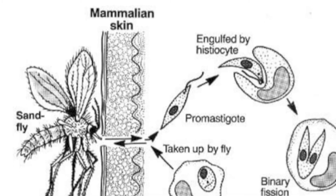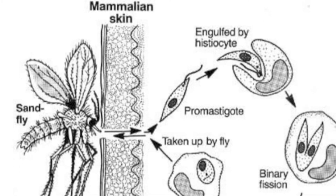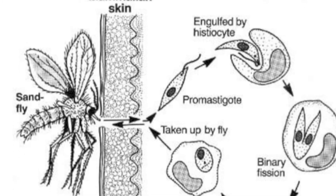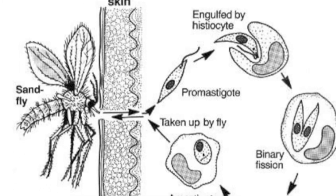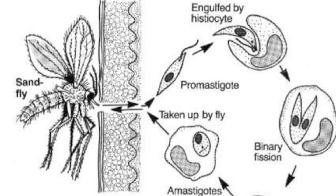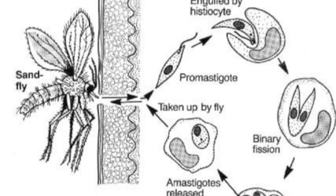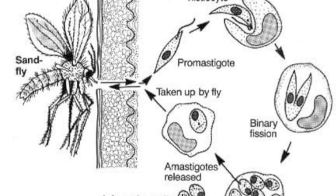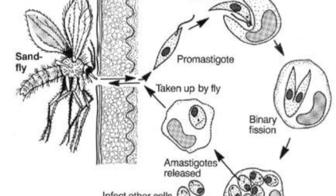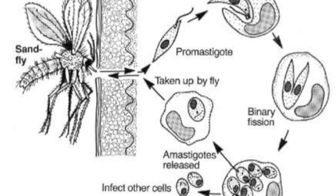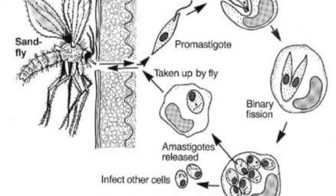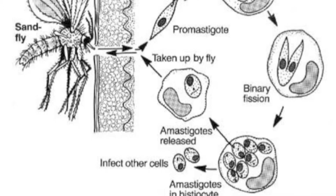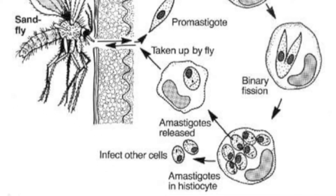These promastigotes are immediately phagocytosed by fixed macrophages of the host, in which they are transformed into amastigotes. The amastigotes multiply by binary fission until the macrophages are filled with Leishmania donovani. The cell then ruptures and releases a large number of amastigotes into the body's circulation.